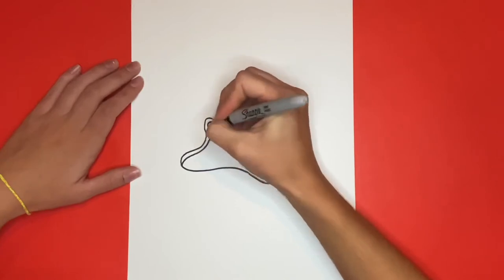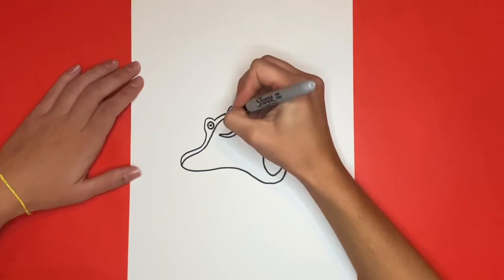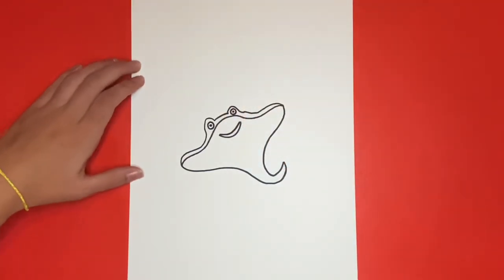Once we're all done drawing the eyes we're going to add a small curved line at the bottom near the tail for detail. This is how to draw a stingray!